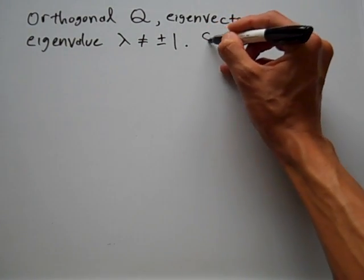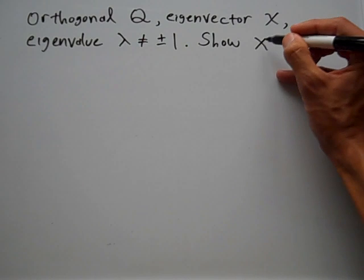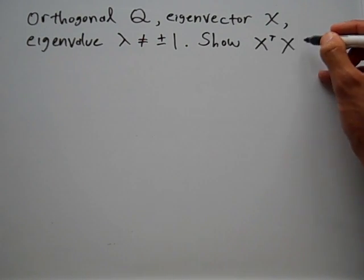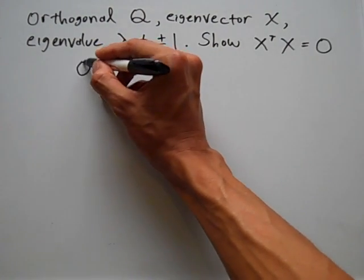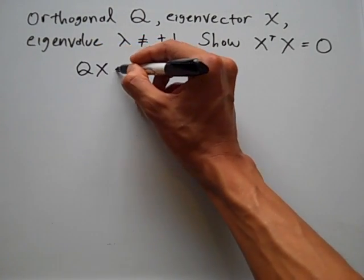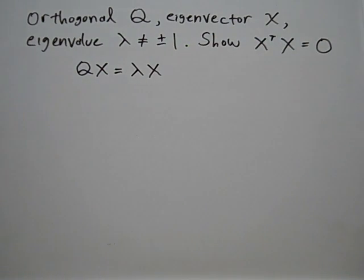I'm going to show that the transpose of X times X is equal to 0. To prove this, let me start off with the relationship between the matrix Q, the eigenvector X, and the eigenvalue lambda. So Q times X will be equal to lambda times X, just based upon what we know about a matrix and its eigenvector and eigenvalue.